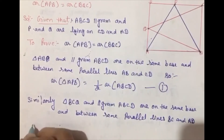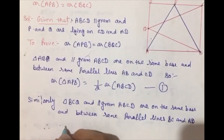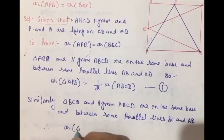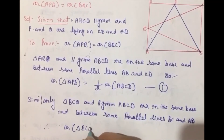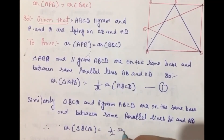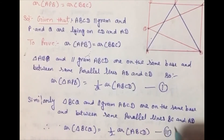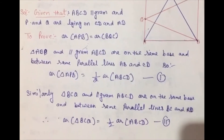Therefore, area of triangle BCQ equal to half of area of parallelogram ABCD। यह हमारा second result है।